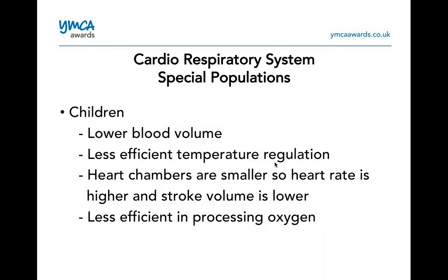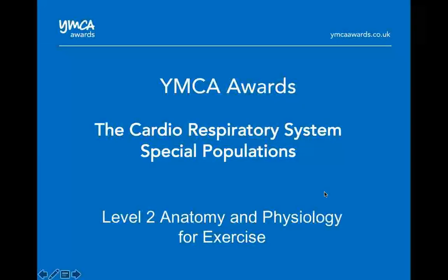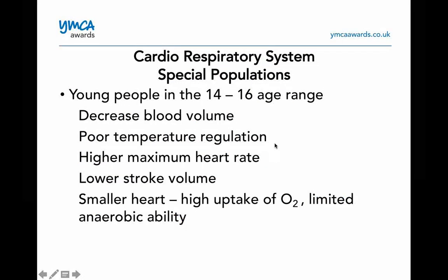Cardiorespiratory systems in special populations. Children: lower blood volume, less efficient temperature regulation, smaller heart chambers so heart rate is higher and stroke volume is lower, and they're less efficient in processing oxygen — hence why kids go bright red when running around. Young people in the 14–16 age range: decreased blood volume, poor temperature regulation, higher maximum heart rate, lower stroke volume, smaller heart, and limited anaerobic ability. This is based on a sedentary individual — an elite young athlete would be different.